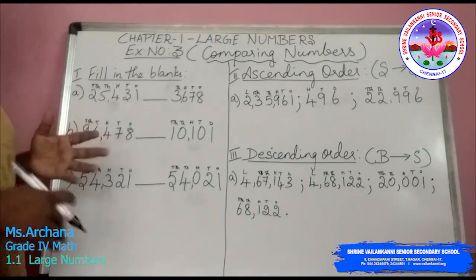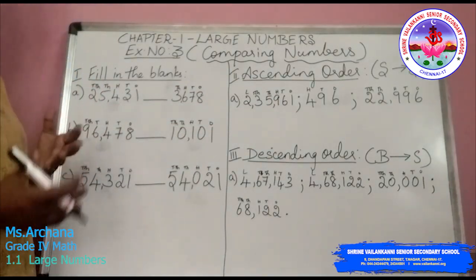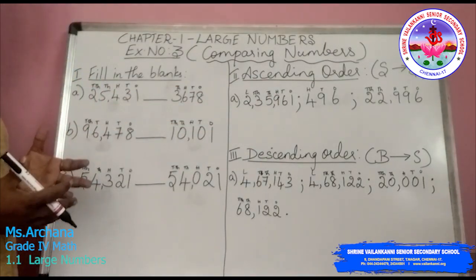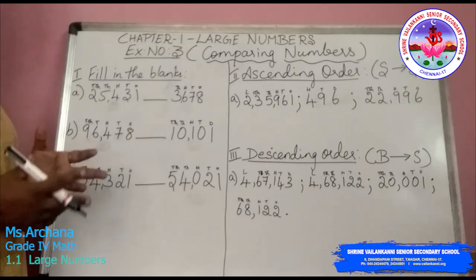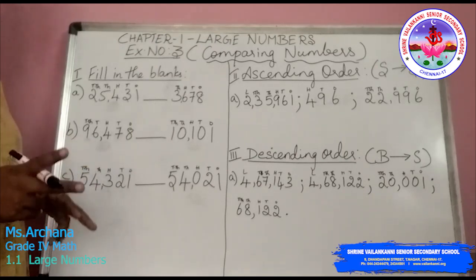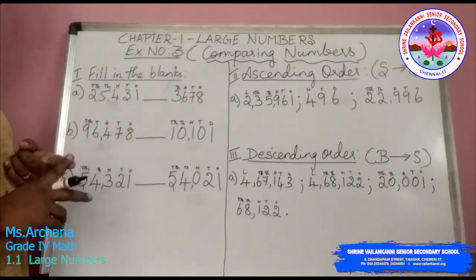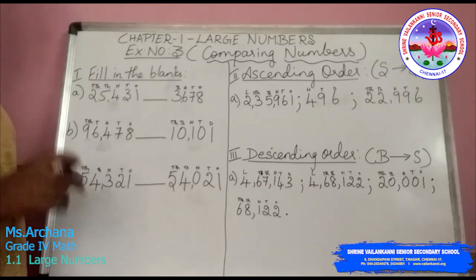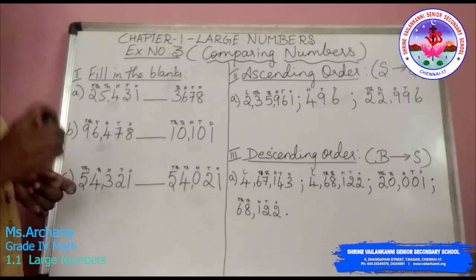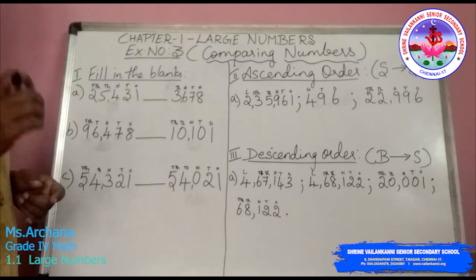Whenever you start comparing numbers, you are going to follow 2 rules. The first rule will be counting the number of digits.